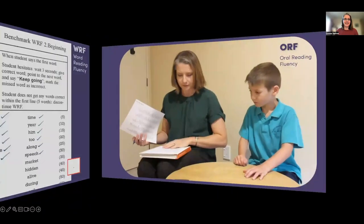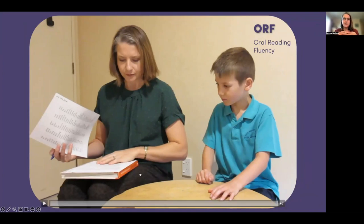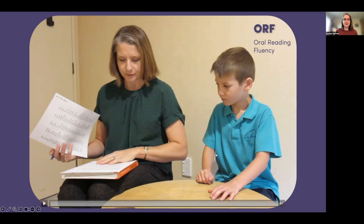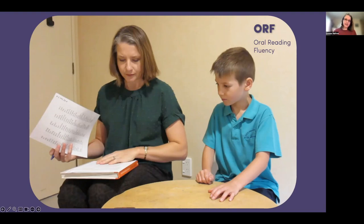Our next subtest is ORF — Oral Reading Fluency. This is a one-minute timed read of a passage of text, and you mark it in a similar way to a running record: crossing out words they skip, writing down words they substitute, noting if they put words in the wrong order, and also noting self-corrections — all step by step in the manual. Let's listen to Millen with his passage read — it's called 'Church Pairs,' on page six.